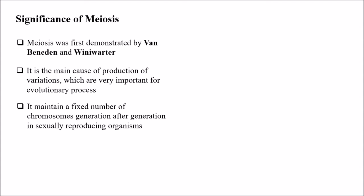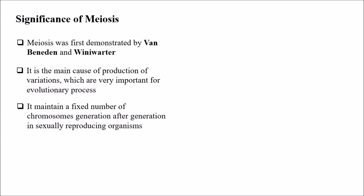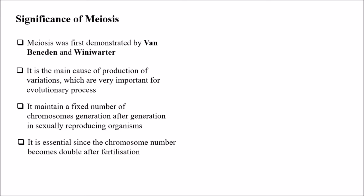If you observe, generation after generation, father will have 46 chromosomes, mother will have 46, and the child also will have 46. So it helps in maintaining the fixed number of chromosomes from generation to generation, especially in sexually reproducing organisms. It is essential since chromosome number becomes double after fertilization.